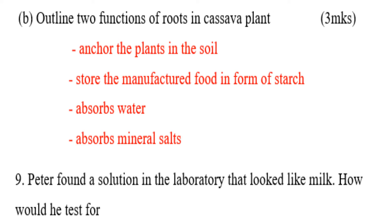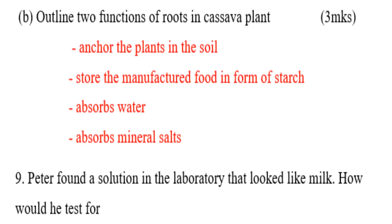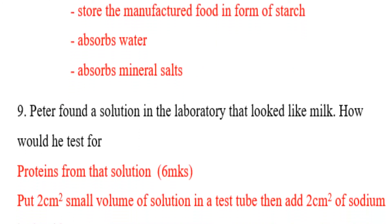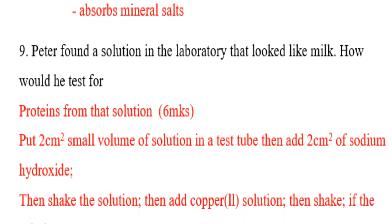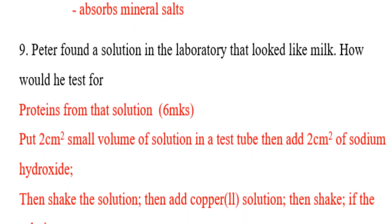Question number nine: Peter found a solution in a laboratory that looked like milk. How would he test for protein? Procedure: Put a small volume of solution in a test tube, then add two centimeters of sodium hydroxide and shake the solution, then add copper sulfate solution and shake it.